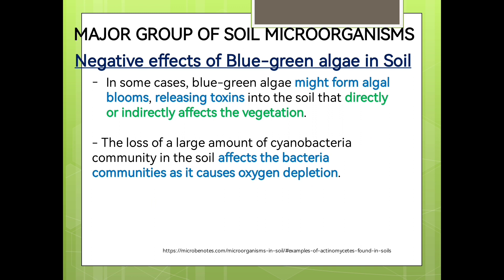There are also negative effects of blue-green algae in the soil. In some cases, blue-green algae might form algal blooms, releasing toxins into the soil that directly or indirectly affect vegetation. Additionally, the loss of a large cyanobacteria community in the soil affects bacterial communities by causing oxygen depletion, which can harm aerobic bacteria that compete for the available oxygen.